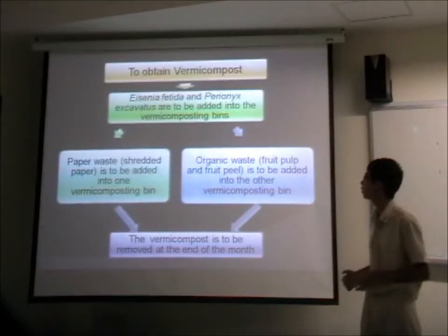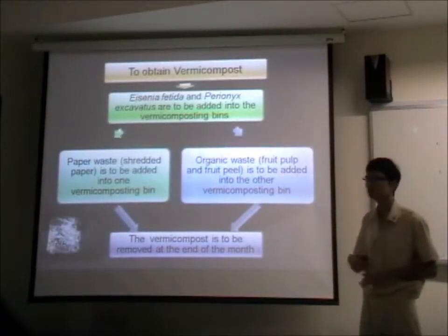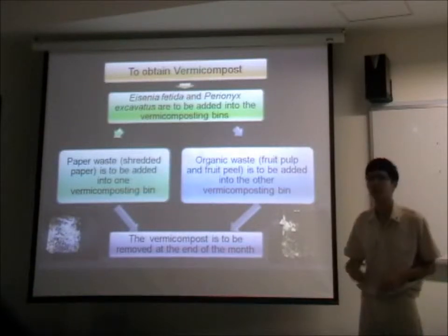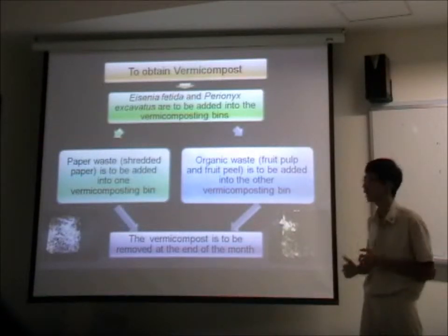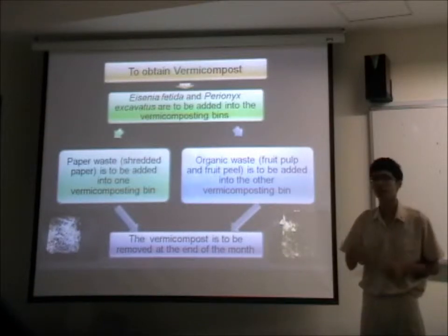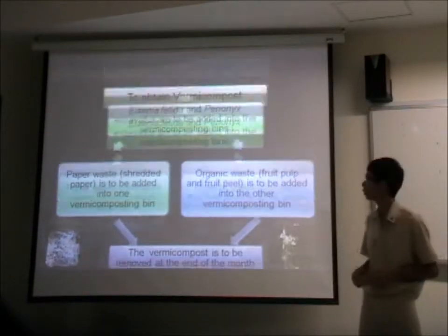To obtain the vermicompost, two species of worms are used in each setup. In the paper waste setup, we add shredded paper, and in the organic waste setup, we add fruit and vegetable matter. At the end of the period, we collect the vermicompost.